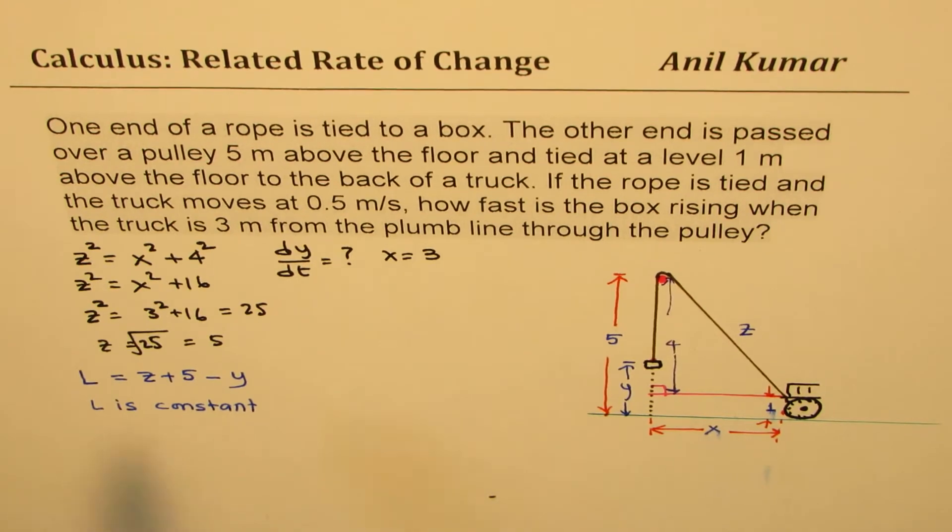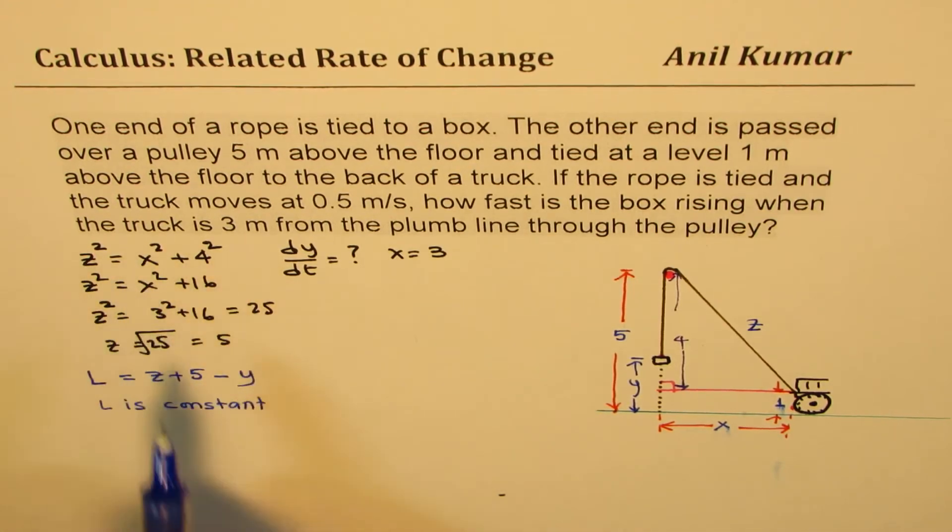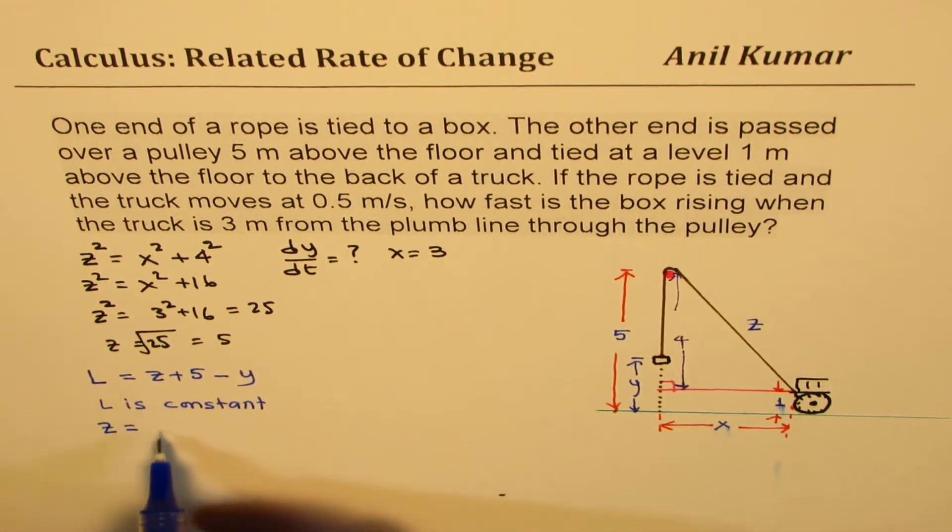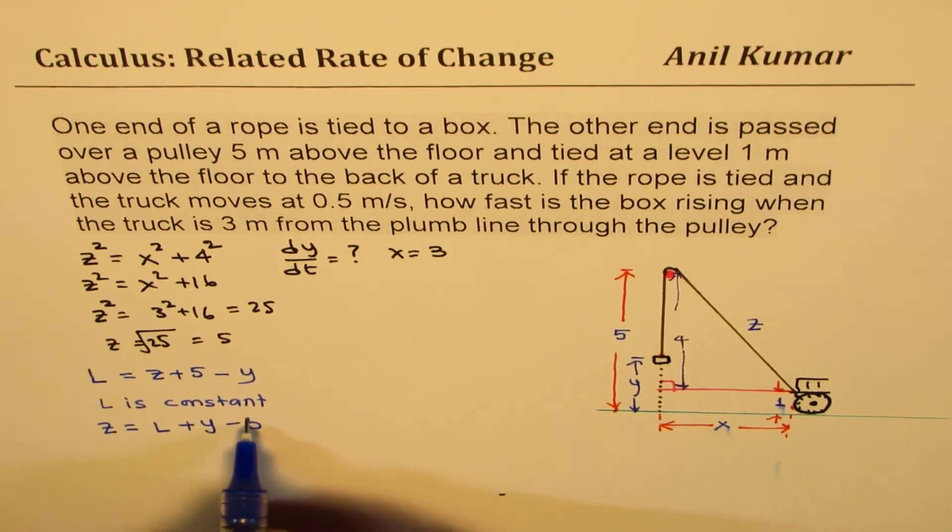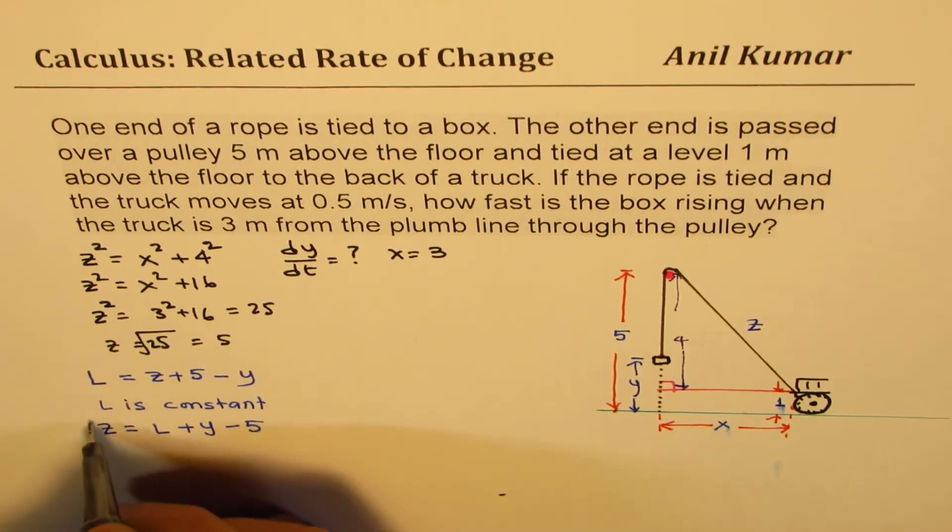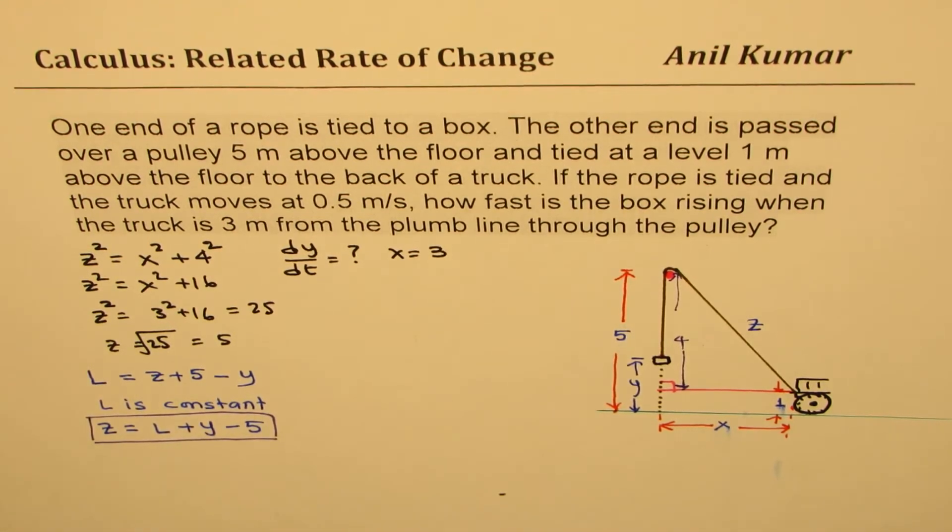And now what we can do is, we can actually isolate Z and substitute in our equation to get equation in L and X. So we could write from here, Z equals L plus Y minus 5. So this is a very critical step right there, which is going to help us solve the equation.